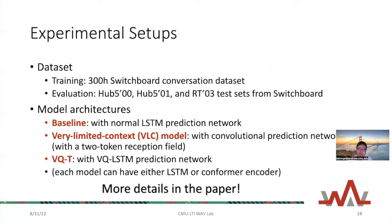For the experiment setup, we use the widely used Switchboard conversational dataset with 300 hours of data, evaluating on three test sets. We compare multiple model architectures: the baseline, the very limited context (VLC) model using a convolutional prediction network with a two-token receptive field, and the VQT using a VQ-LSTM prediction network. Each model can have either an LSTM or Conformer encoder. Further architectural and data augmentation details are in the paper.